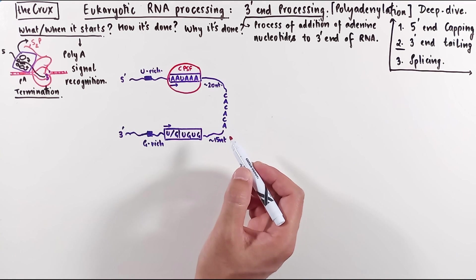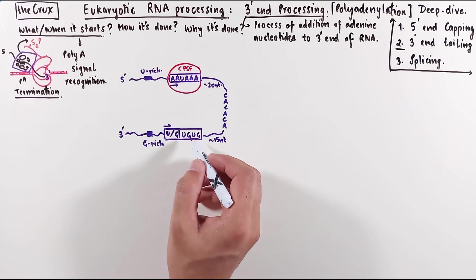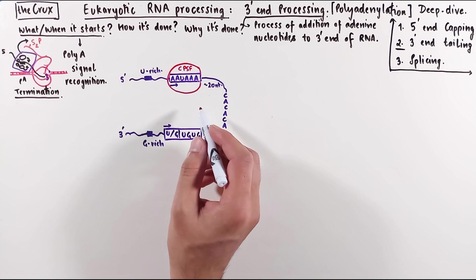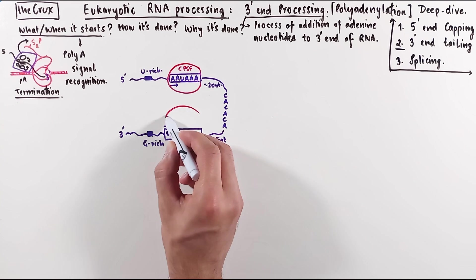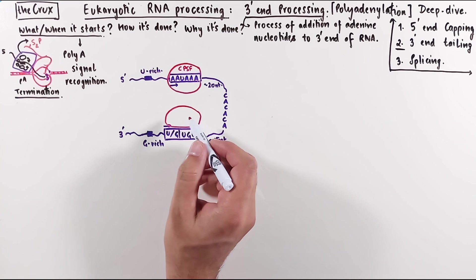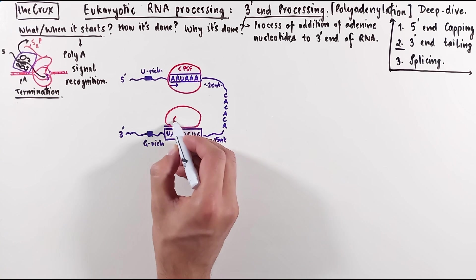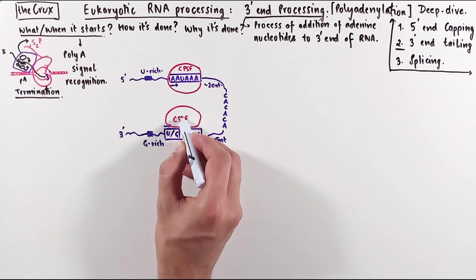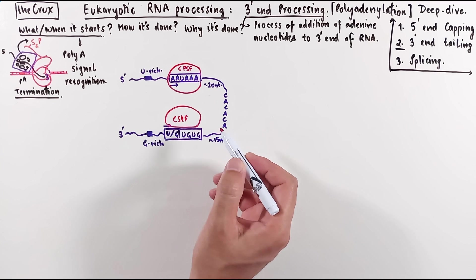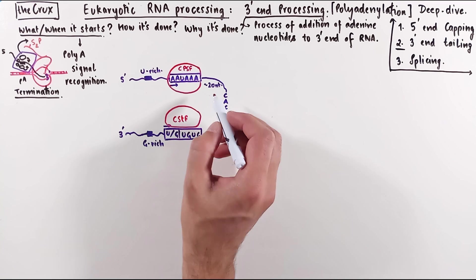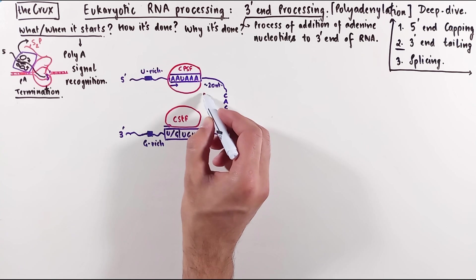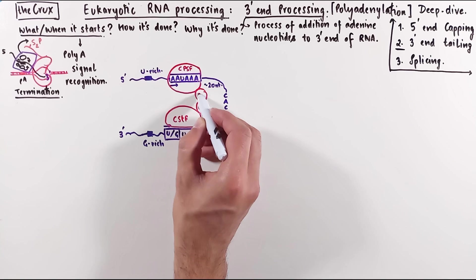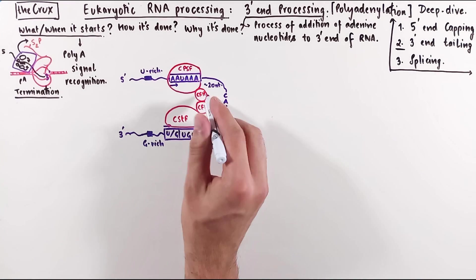The polyA signal stretch is bound by the CPSF. CPSF has some RNA recognition motif. CPSF and the modifications on the C-terminal domain of the RNA polymerase help in the recruitment of the CSTF protein. CSTF protein binds to this GU-rich region and also has RNA recognition motifs. Once these two proteins are bound at these positions, they help and recruit the cleavage factors 1 and 2.